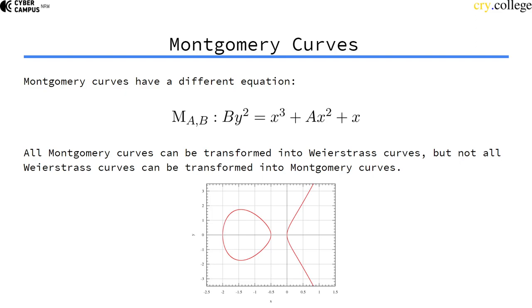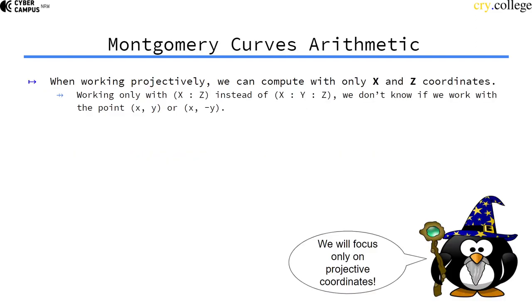So why would we change the curve equation? What do we get from that? First I want to say we will only work projectively with Montgomery curves here because that has some advantages that we'll see later.